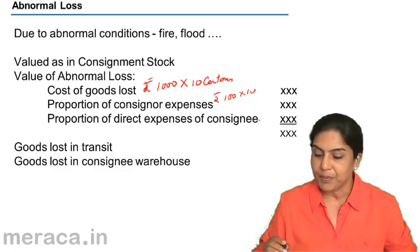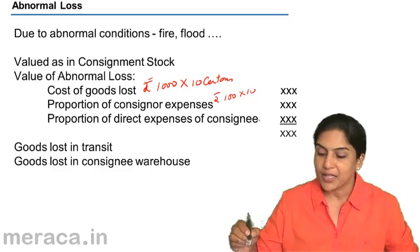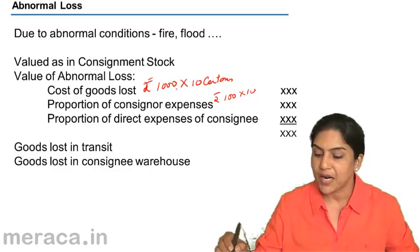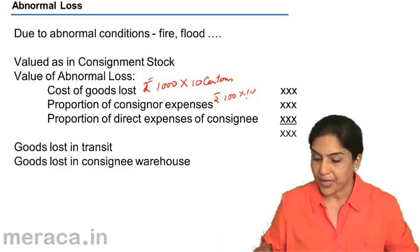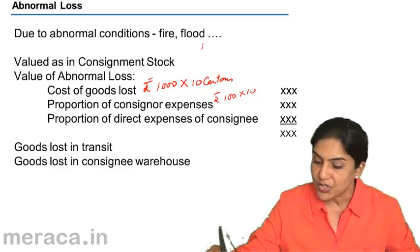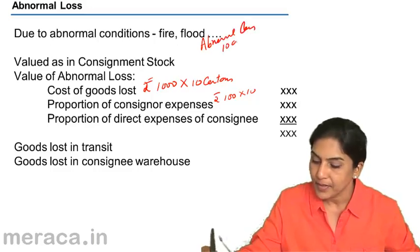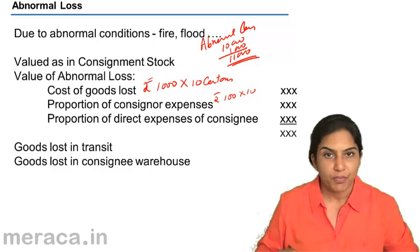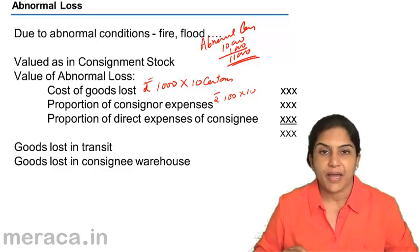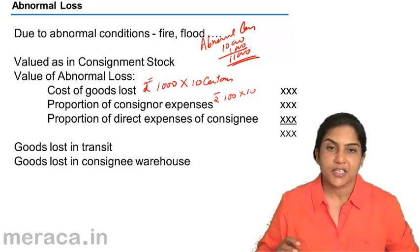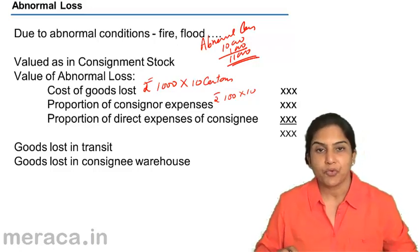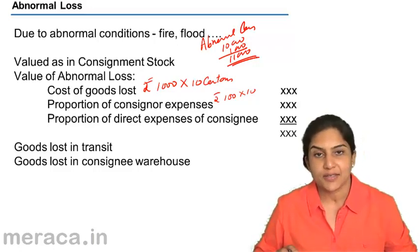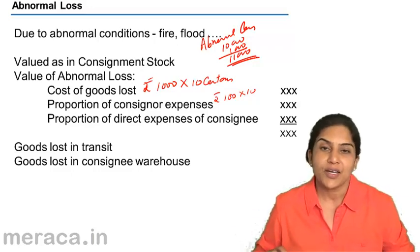In this example, 1,000 per carton × 10 cartons plus 100 × 10 — the abnormal loss would be valued at 10,000 plus 1,000 = 11,000 rupees, if 10 cartons were lost in transit while moving from the consigner's place to the consignee.